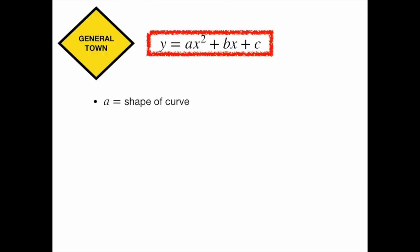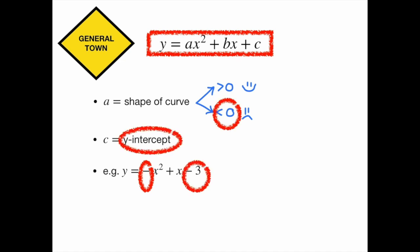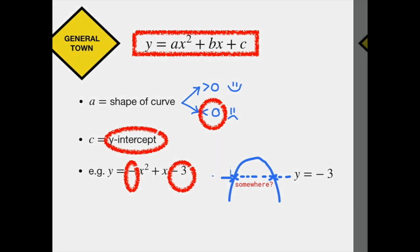General Town is ideally where you always want to start off at. The value of A tells you whether the curve looks like a smiley or sad face, and the C value shows where the Y intercept is. But, as this example shows, there are limitations to what you can sketch. So, we move on.